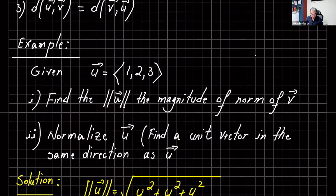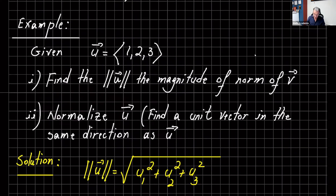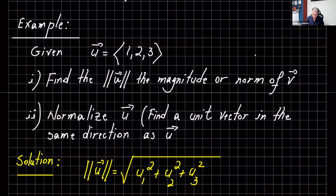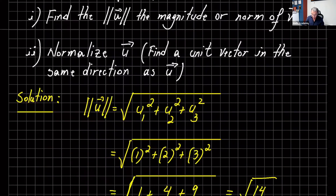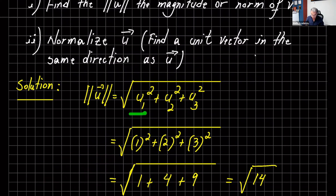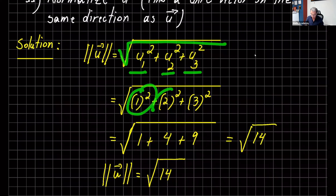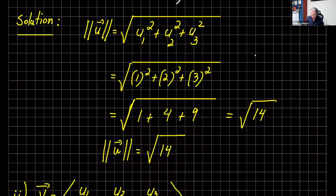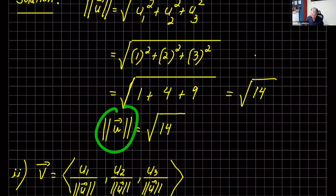Here are a couple of examples. Given a vector, find the norm of v and normalize u. The norm of u is the square root of u1 squared plus u2 squared plus u3 squared. With components 1, 2, 3, that is the square root of 1 squared plus 2 squared plus 3 squared, which gives us the square root of 14. So the norm of u, or the magnitude of u, is the square root of 14.